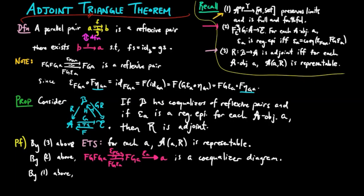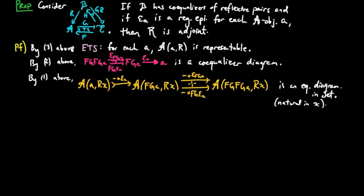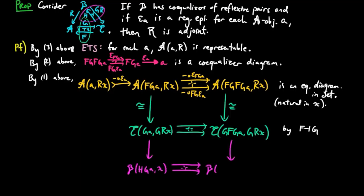By fact 1 above, since the Yoneda embedding preserves limits, it takes this co-equalizer in a to the following equalizer in Set, which is natural in x. Then using the adjoint situation f, g we have the following isomorphic parallel pair of morphisms. And then by the adjoint situation h, g, r we arrive at the following isomorphism of parallel pairs in the category of sets, noting again that everything is natural in x.